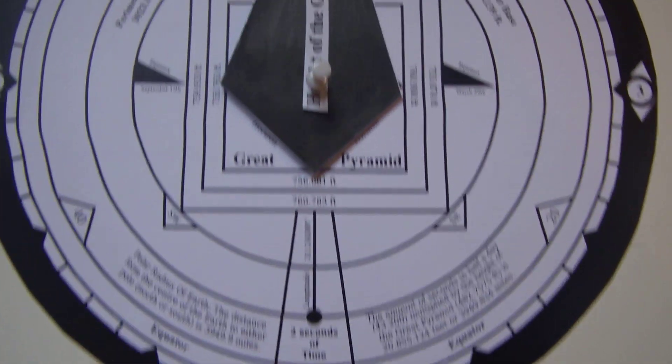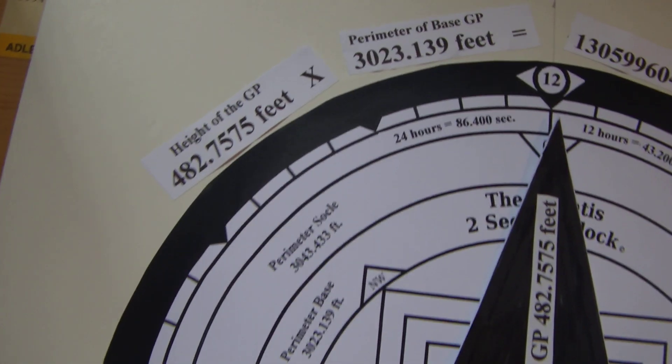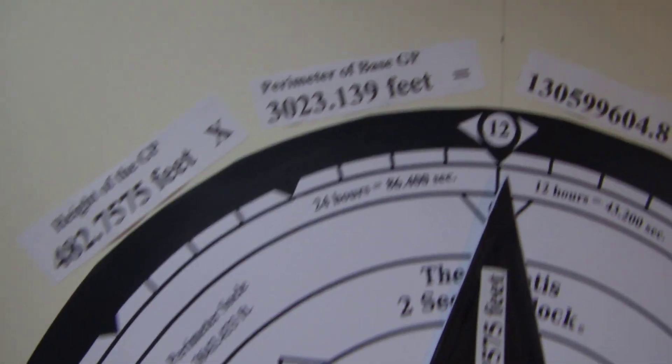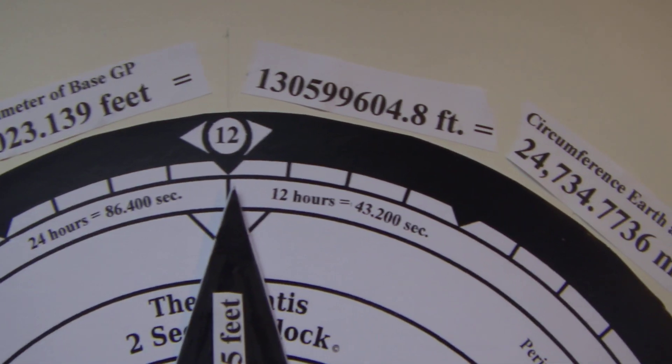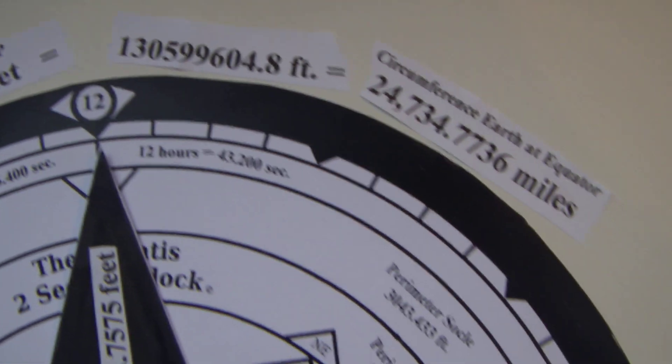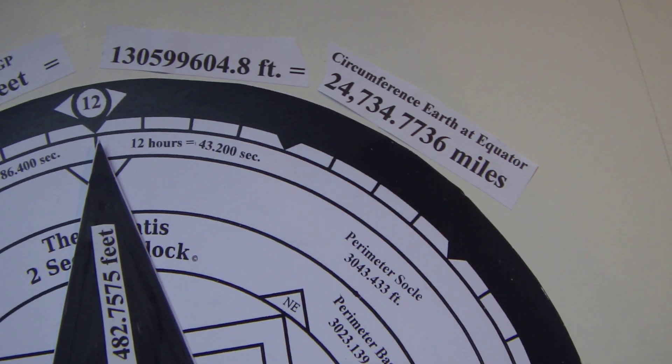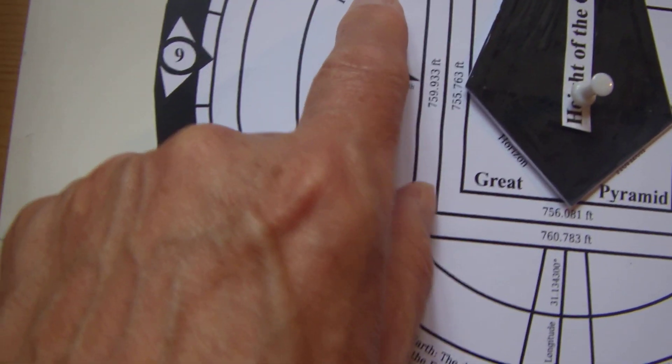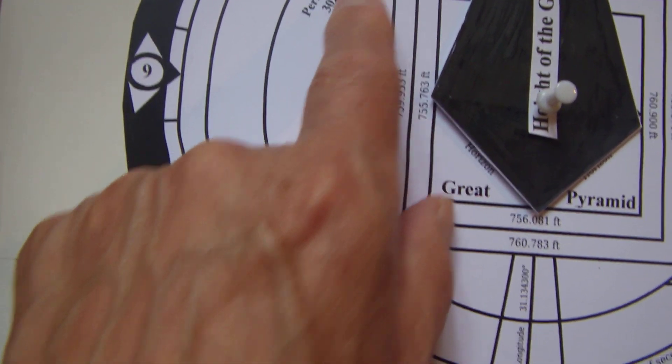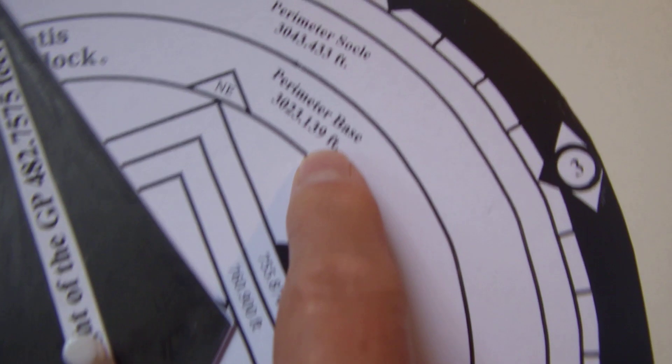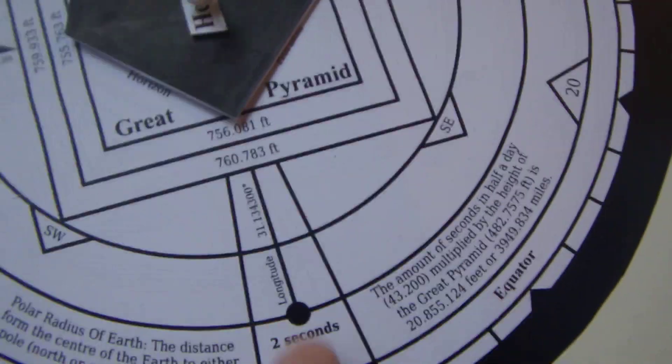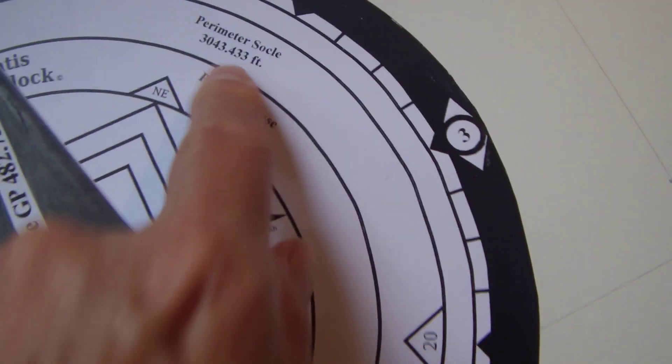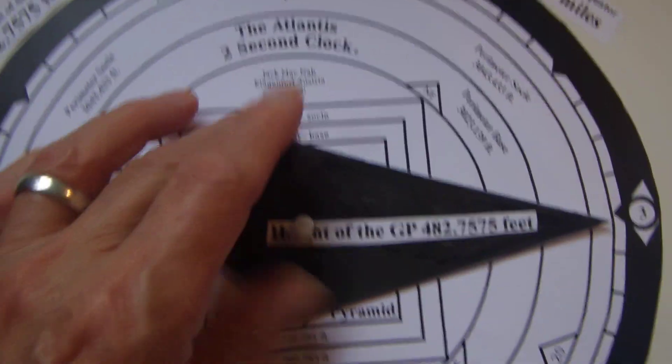Up here we have the numbers at the top: the height of the Great Pyramid of Giza, the perimeter at the base in feet, and then the circumference of the earth at the equator - 24,734 miles is what we calculate. So this right here is the perimeter at the base. It goes around here and there's your number, the distance.